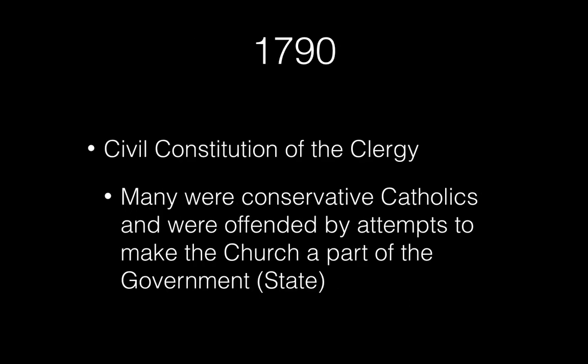Moving on to 1790, the National Assembly reforms the status of the church through the Civil Constitution of the Clergy, bringing the Catholic Church under the control of the state. The government will oversee the church, appoint people to positions, and put clergy on salaries. This was something the peasants were not supportive of. The peasants were devout Catholics who didn't want the institution of the Catholic Church touched — they wanted corrupt people removed, but not the church itself. Many were conservative Catholics, quite offended at making the church part of the state.